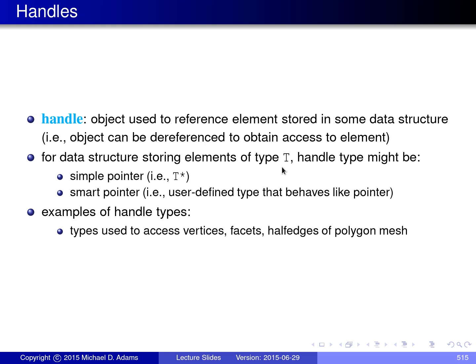The handle object can be dereferenced in order to obtain access to the element to which it refers. So, for a data structure that stores elements of type T, a handle type might correspond to just a simple pointer type, pointer to T, or it could be some user-defined type that behaves like a pointer, in other words, some kind of smart pointer type.